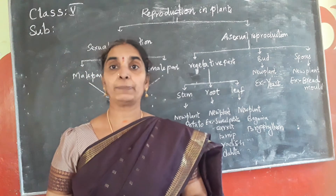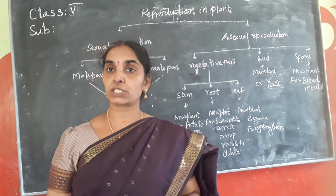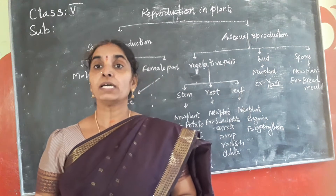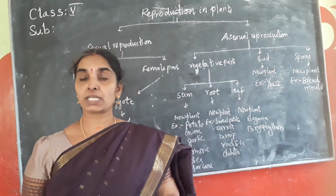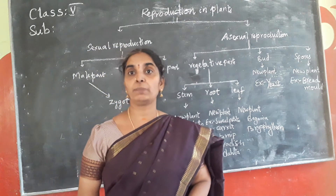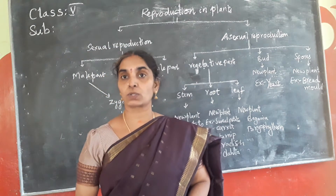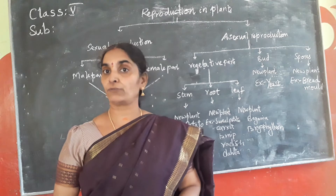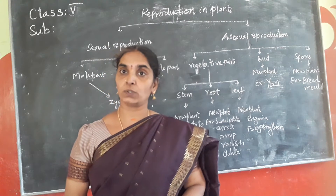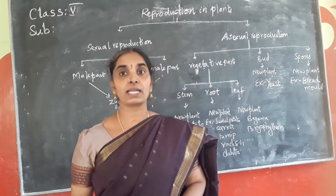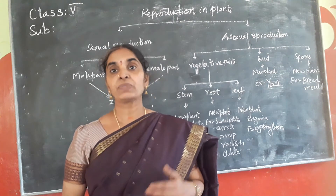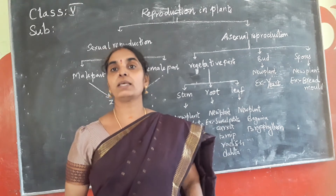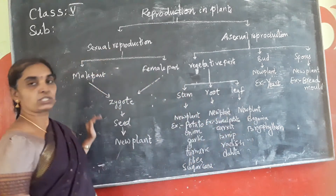You also know that reproduction is of two types: sexual reproduction and asexual reproduction. Reproduction which takes place with the fusion of male and female gametes is called sexual reproduction, which results in the formation of a zygote. The zygote in turn gives rise to the seed, and the seed develops into the new plant.